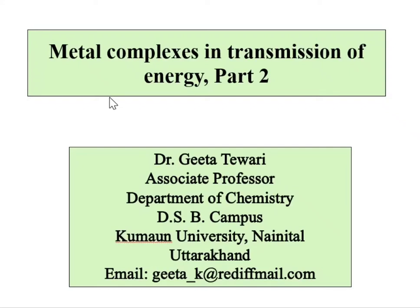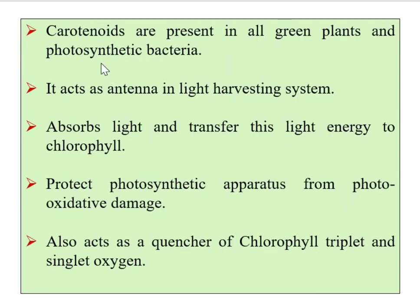Welcome to part 2 of metal complexes in transmission of energy. Here we will discuss the mechanism by which metal complexes can transmit energy, involving the different steps of photosynthetic reactions. In the previous lecture we discussed three pigments: chlorophyll A, chlorophyll B, and carotenoids — specifically beta-carotene. These carotenoids are present in all green plants and photosynthetic bacteria.